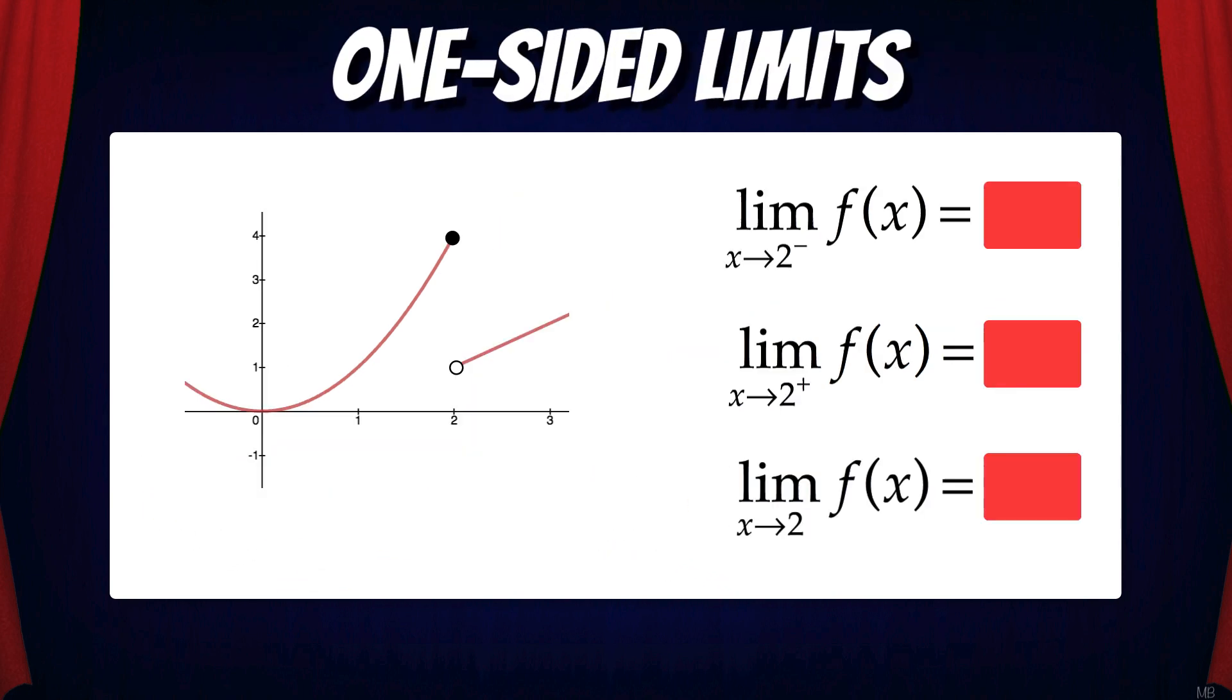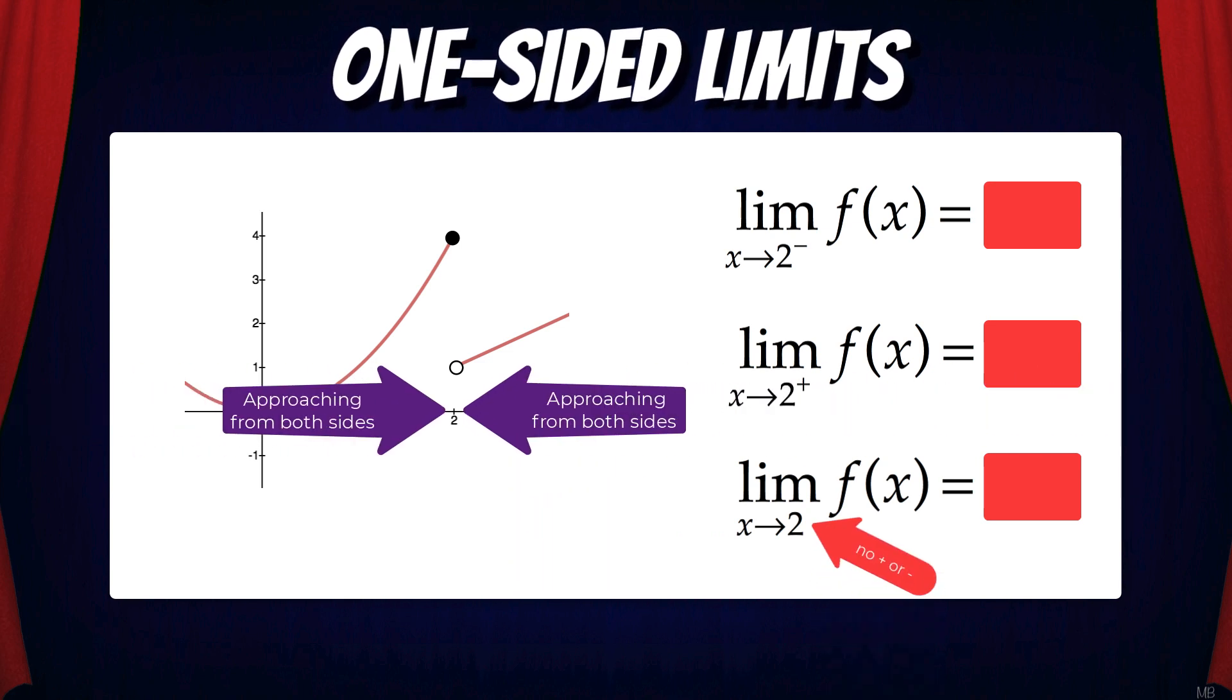We also can have one-sided limits. The little minus sign means approaching from the left. The plus sign means approaching from the right. If you don't see a plus or minus, it means approaching from both sides.